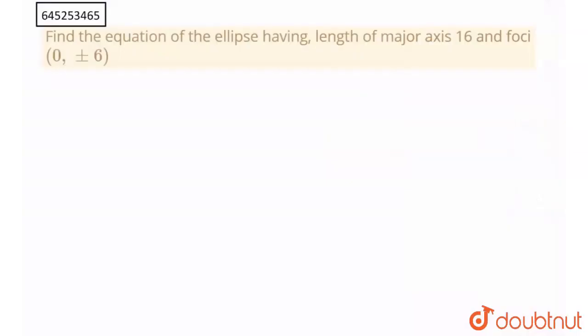Hello everyone. The question says to find the equation of the ellipse whose length of the major axis is 16 and foci is (0, ±6). So here I have the coordinates of foci as (0, ±6). As you can see here, my foci lies on the y-axis.